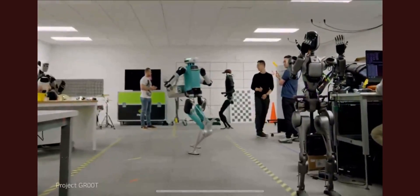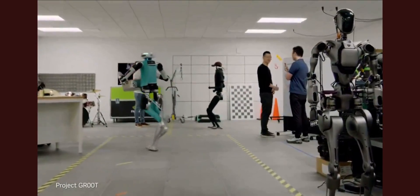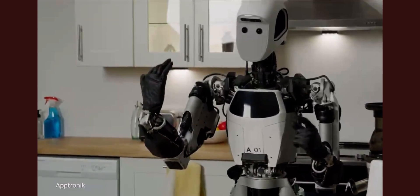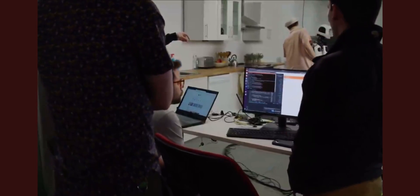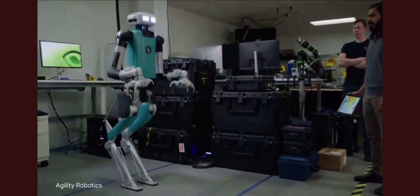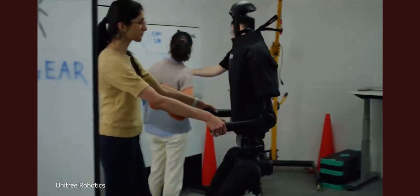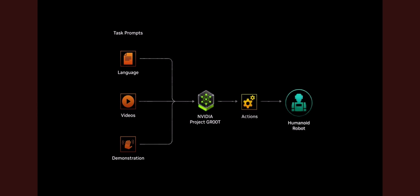This is NVIDIA Project GROUP, a general purpose foundation model for humanoid robot learning. The GROUP model takes multimodal instructions and past interactions as input and produces the next action for the robot to execute.